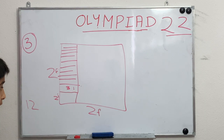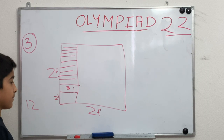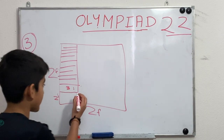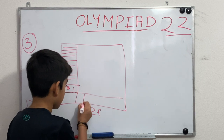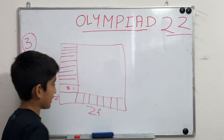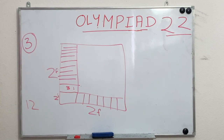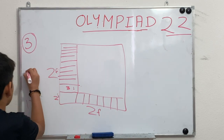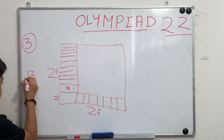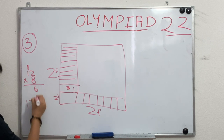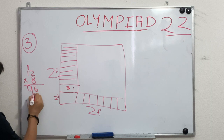For the other side, the tile is 3 inches and the square is 2 feet, which is 24 inches. 24 divided by 3 is 8, so 8 tiles fit on that side. To find the total, we multiply 12 by 8, giving us 96 tiles as our answer.